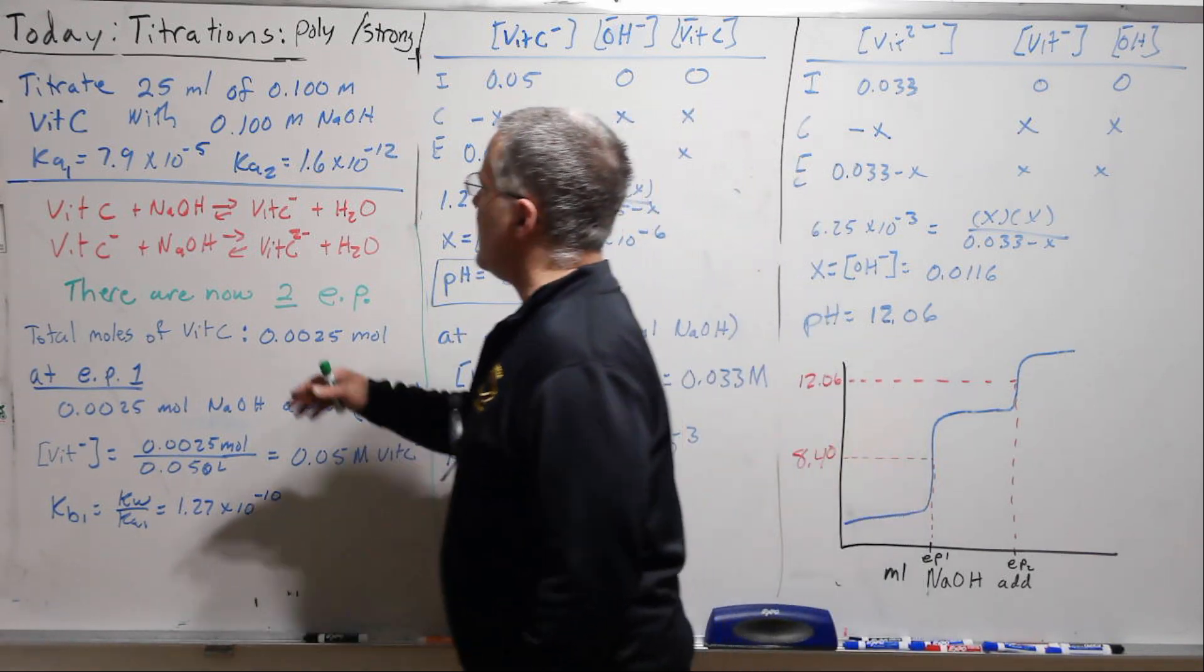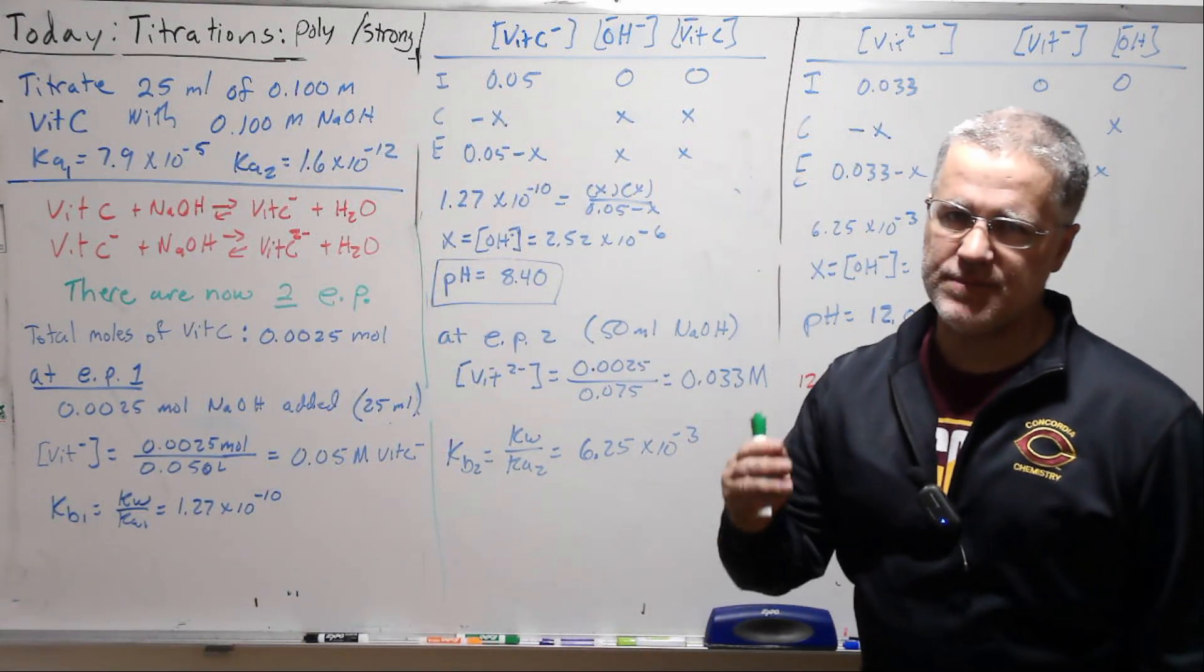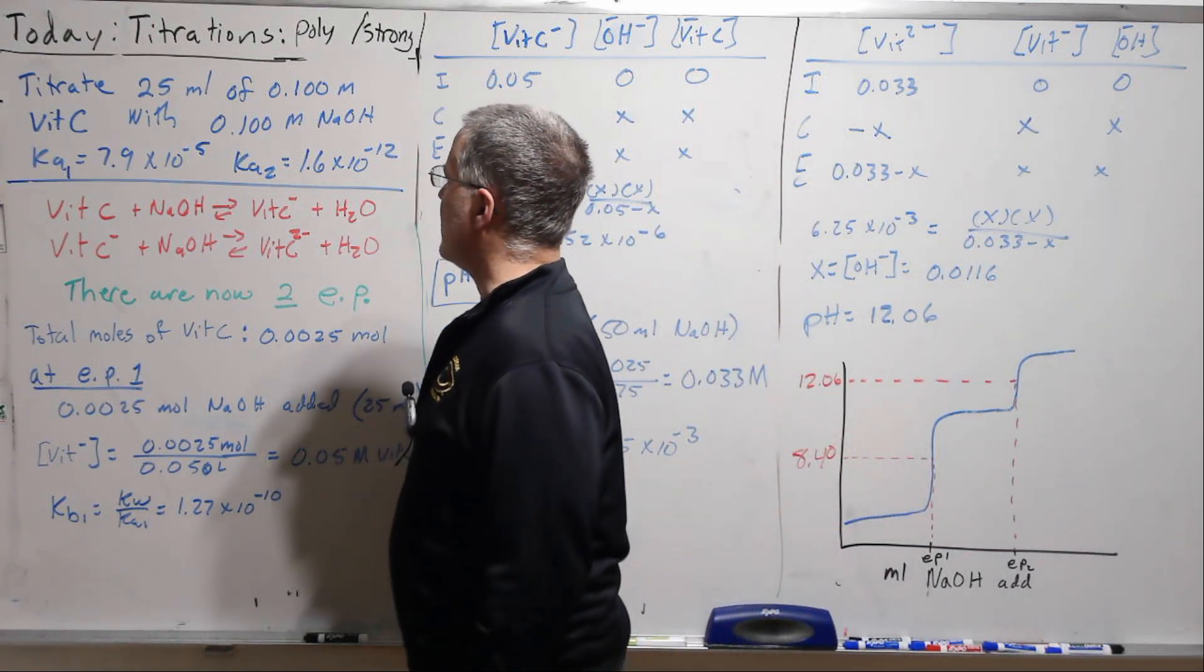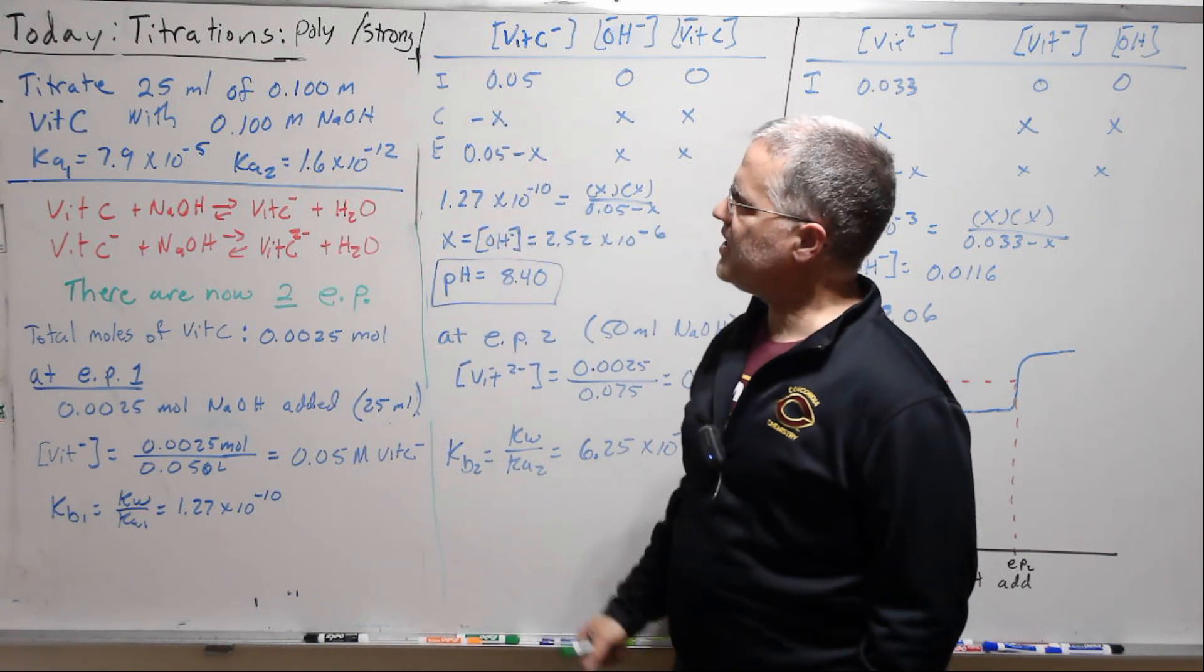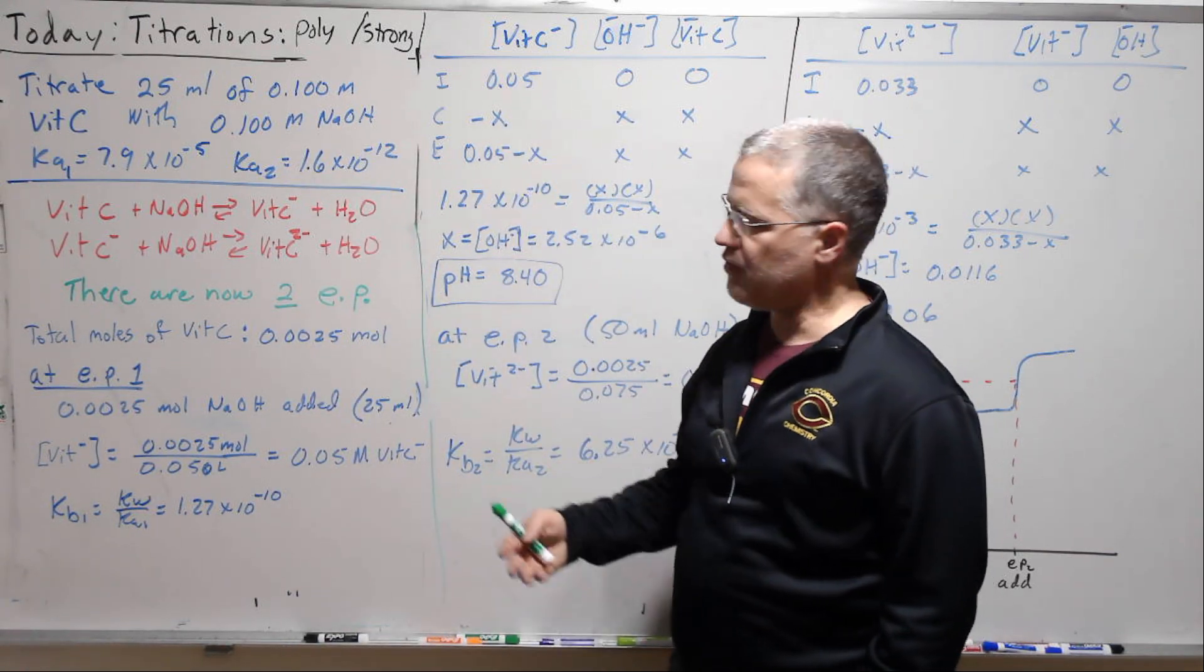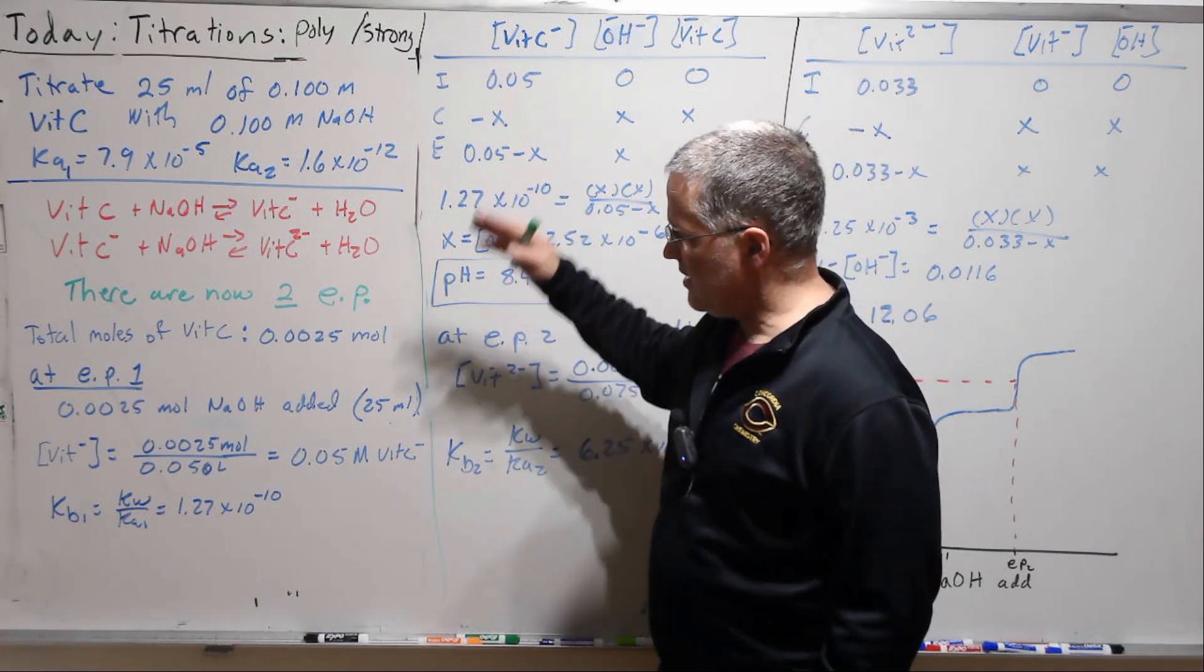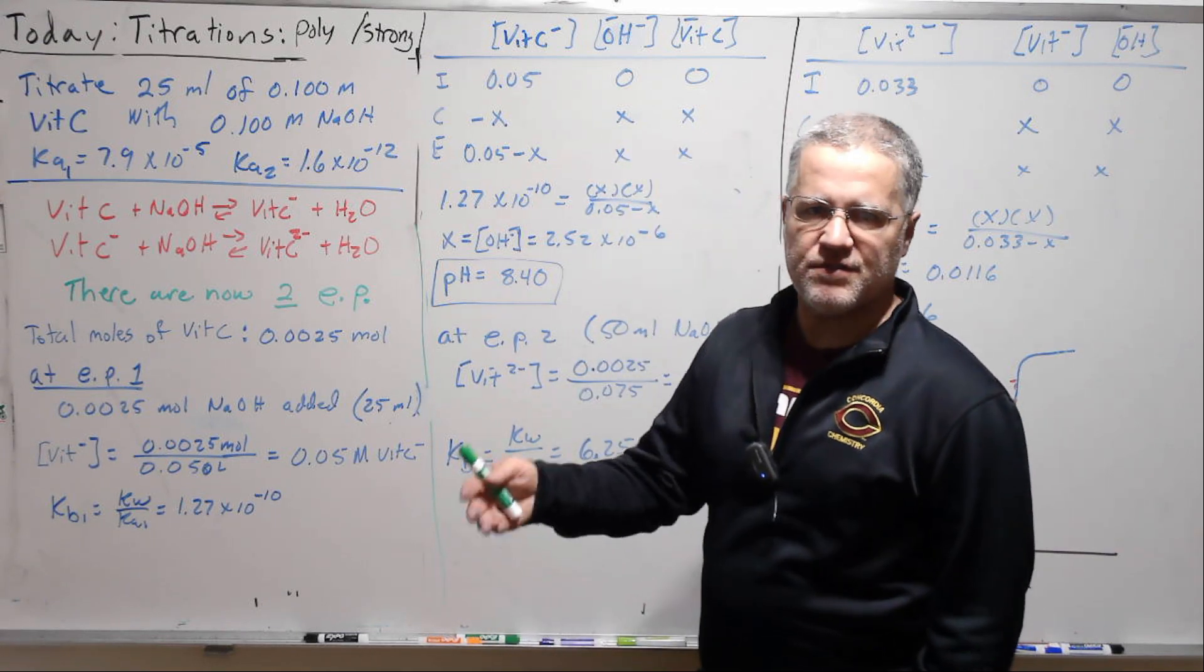As our working example, let's titrate 0.1 molar vitamin C, which is a diprotic acid, with 0.1 molar NaOH. For convenience, we have the same concentration, the same numbers we've been using before. I'm going to skip a few steps through here.